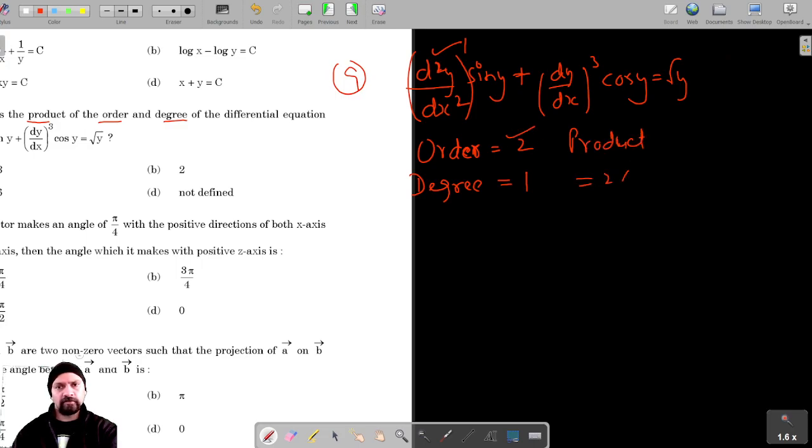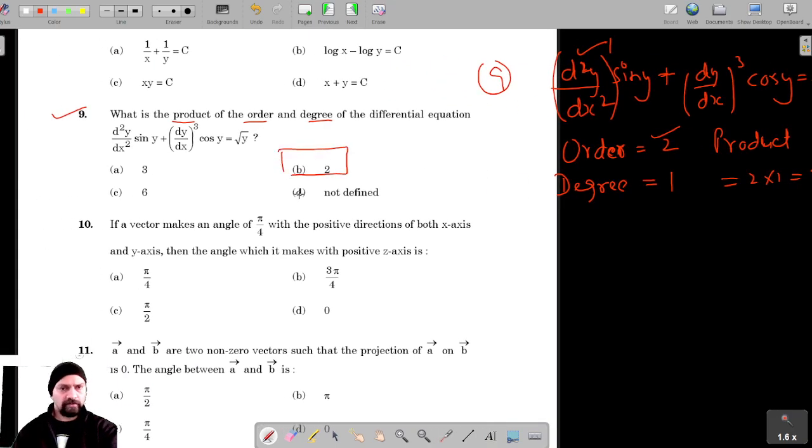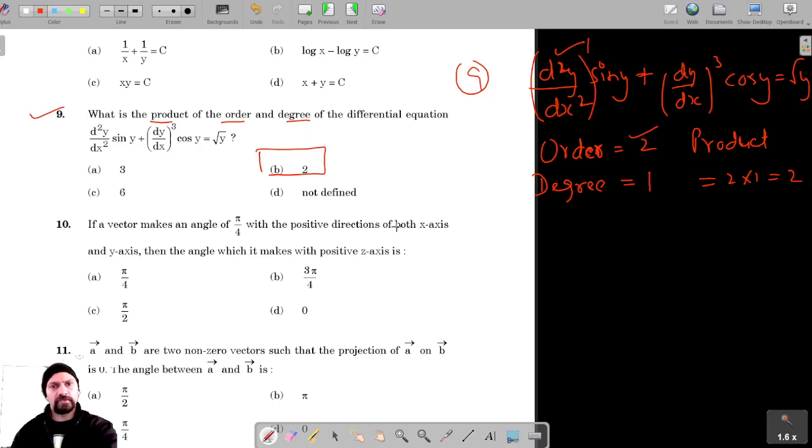The product of order and degree: order is 2, degree is 1, which equals 2. So V is the correct option for this. Let's move on to question number 10.